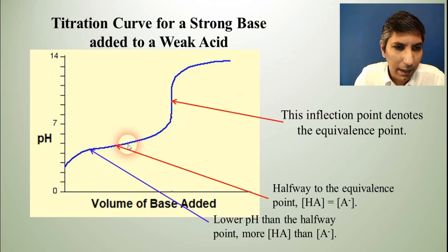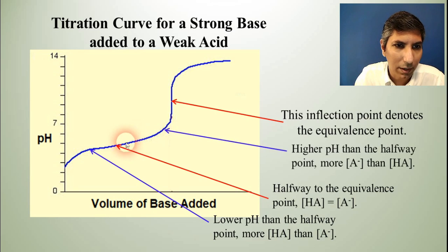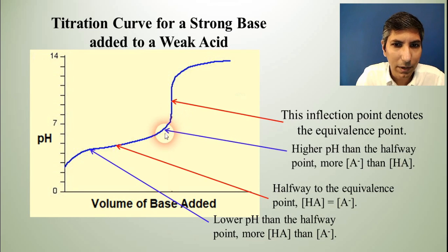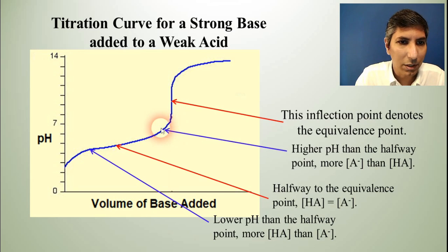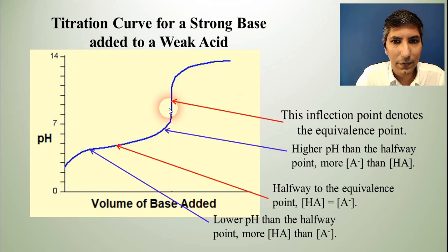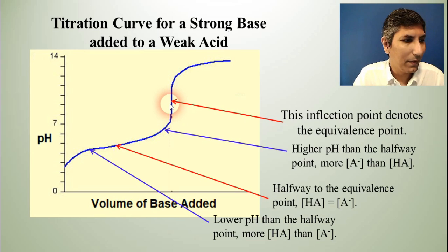On the other side, if you go past the halfway point and before the equivalence point, what you have is more conjugate base than acid — so that's what's going to predominate. Once you get to the equivalence point, you just have the weak base there.